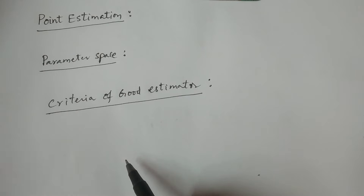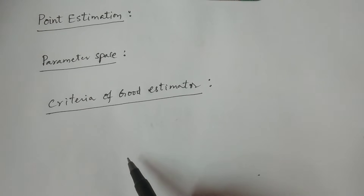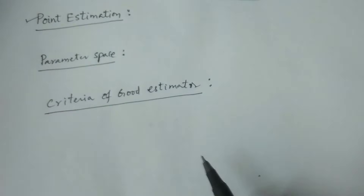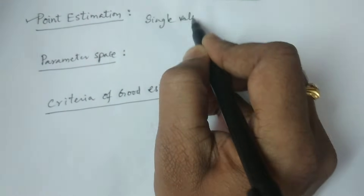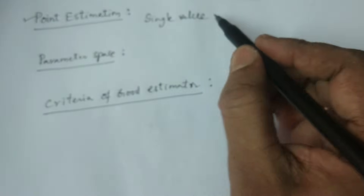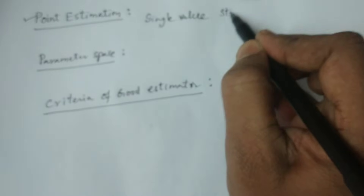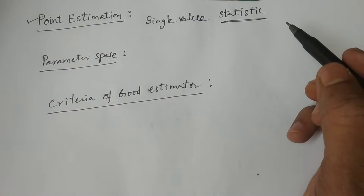By using a single value of the statistic, we have to estimate the population parameter — it is called point estimation. Finding a value that depends on sample observations to estimate the population parameter is point estimation. You have to calculate a single value, a single statistic — one statistic is going to be used to estimate the population parameter.